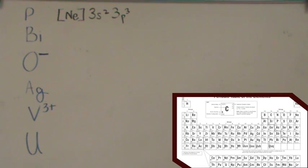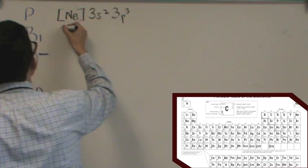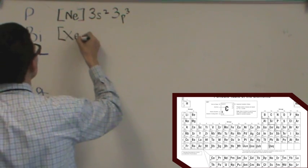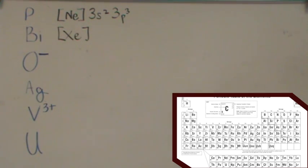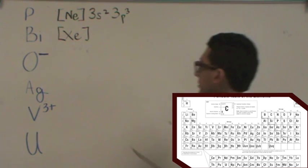Bismuth. Okay, for bismuth, the previous noble gas is number 54, xenon. So let's write that down. Xenon. Then after xenon, we go over to cesium and barium. That's the 6S level. So you have 6S2.